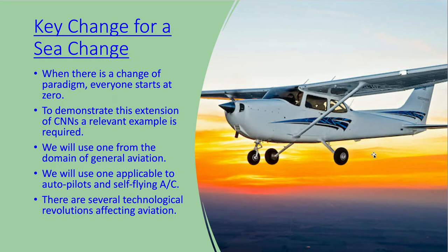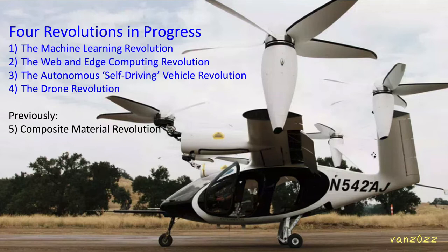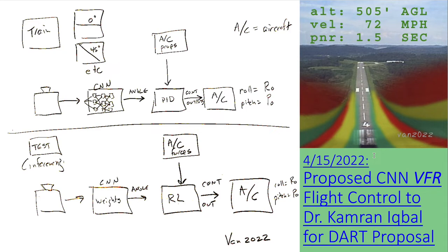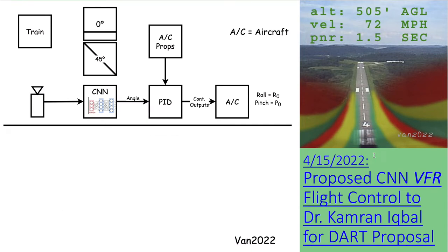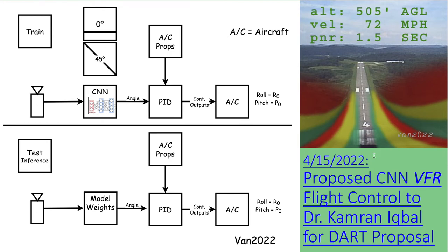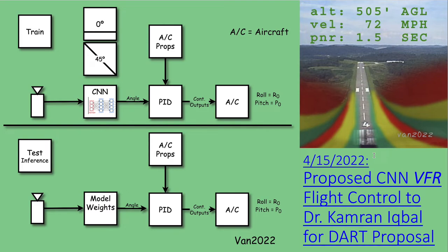Key change — when there's a change of paradigm, everyone starts at zero. To demonstrate this extension of CNNs, a relevant example is required. We will use one from the domain of general aviation, applicable to autopilots and self-flying aircraft. There are several technical revolutions affecting aviation worth considering: the machine learning revolution, the web, edge computing and cloud revolution, the autonomous self-driving vehicle revolution, and the drone revolution. Previously, there was a composite material revolution that made electric aircraft possible. Earlier this year, I proposed using a CNN for a general aviation autopilot under VFR rules. This block diagram has two sections: the top section shows a video camera feeding a CNN which outputs the current roll-angle to a PID controller implementing Laplace transform control laws to keep the wings level; the bottom section shows a video camera feeding a pre-trained model which outputs the current roll-angle to a reinforcement learning program. My committee advised me to downscope my efforts, so I focused on the CNN — this led to some unexpected benefits.